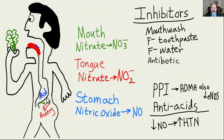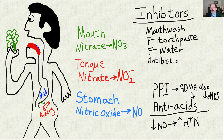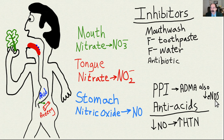In the stomach, anything that blocks gastric acid production is also going to decrease the ability to convert nitrite (NO2) into nitric oxide (NO). PPIs — proton pump inhibitors, the drugs that end in '-azole' — are especially bad because they also increase ADMA inside the body, which inhibits endothelial nitric oxide synthase. So you're double-harming yourself: not only losing the dietary component of nitric oxide, but also diminishing the eNOS component, which can lead to significant hypertension.